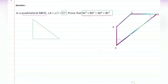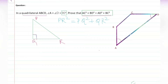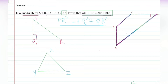If you have a right angle triangle PQR with the right angle at Q, then PR² equals PQ² plus QR². The second thing you need to know is that for any triangle — right angle, isosceles, equilateral, or scalene — the sum of all angles equals 180 degrees. So angle X plus angle Y plus angle Z equals 180 degrees.